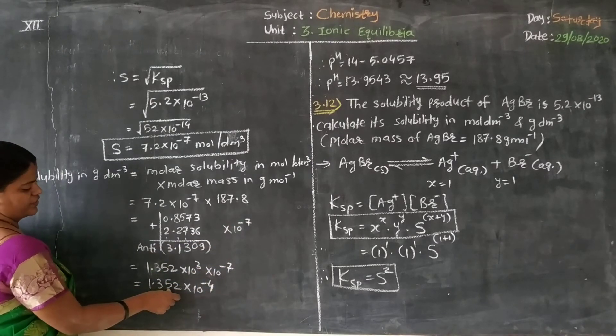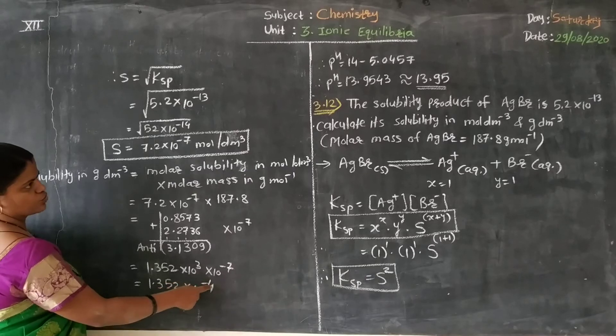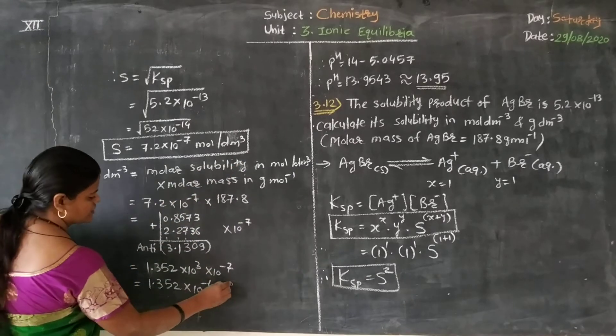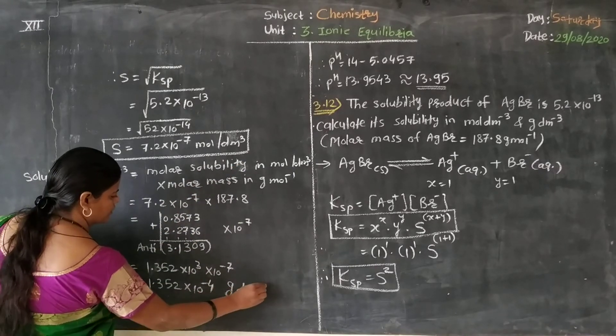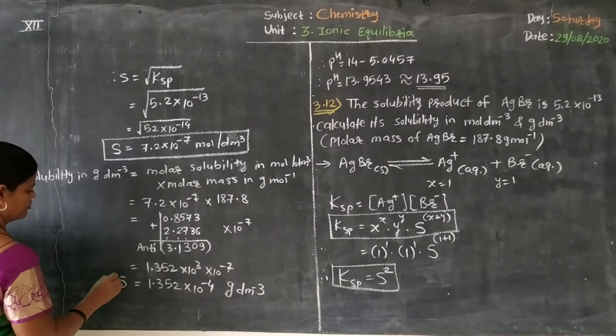So the final answer is 1.352 × 10⁻⁴, and the unit is gram per dm³ for solubility.